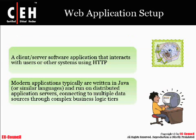A web application setup is basically a client-server software application that interacts with users and other systems using HTTP. Normally we're going to use something along the lines of Java and run some sort of distributed application. There are going to be some back-end components that may be SQL or something internal to the organization. You can treat the web server itself as an intermediary where we're connecting up — preferably to a firewall first, then to some web application servers, which then query the back-end to pull up some database information.